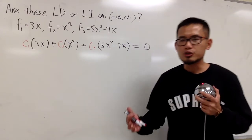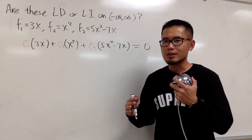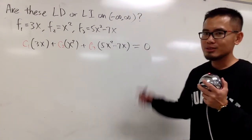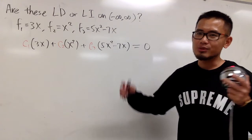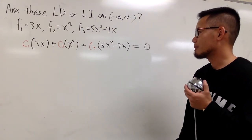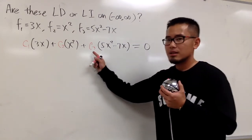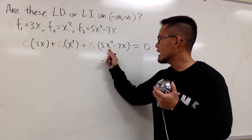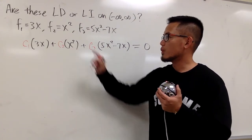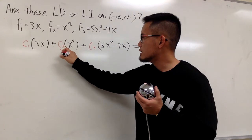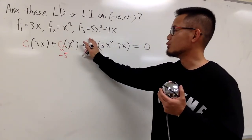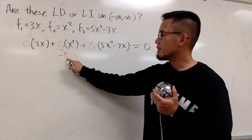Sometimes you need to do the algebra because the functions may not be as straightforward. But if it's as easy as this one, you don't have to show a lot of algebra steps. I have a 5x squared term here and an x squared term there. Why don't I just pick c2 to be negative 5? Imagine c3 is not yet considered — then I get negative 5x squared, and the 5x squared terms will cancel each other out.